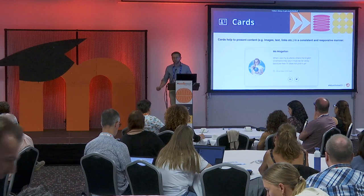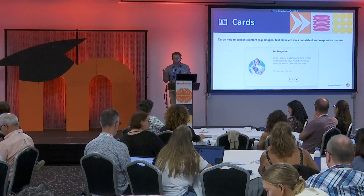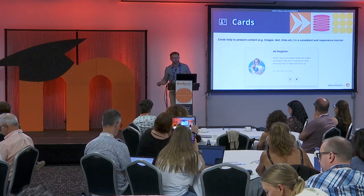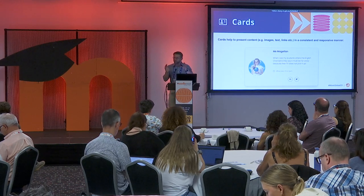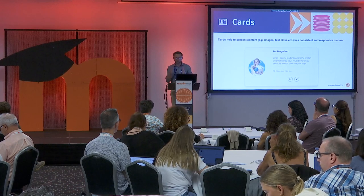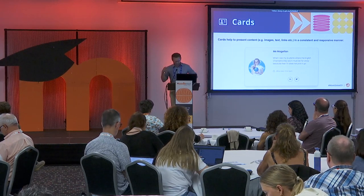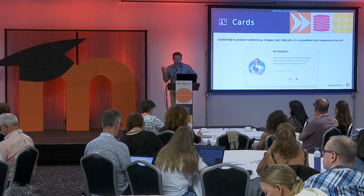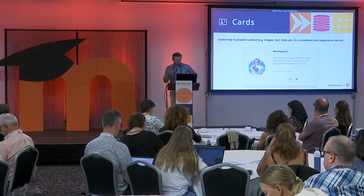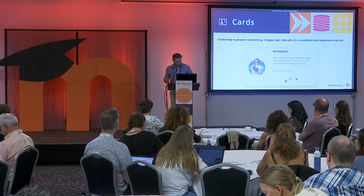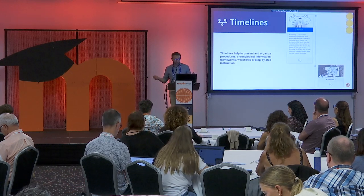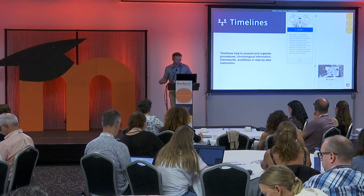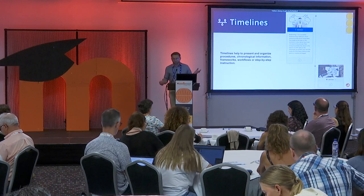Cards are very powerful components. What cards do very well is they help you combine text, images, and links together in a consistent and responsive way. I have seen in the past courses where people struggle with wrapping text around images — on a desktop page it looks good, but once you start scaling the page on mobile devices, the text wraps around the image in a weird way. Cards are the standard for including text, images, and links together. Timelines are also one of my favorite components — they're really good not just for presenting chronological information, but also step-by-step instructions, frameworks, et cetera.